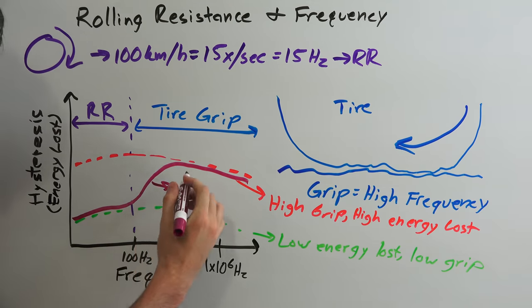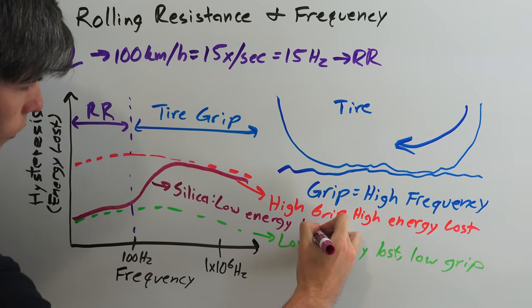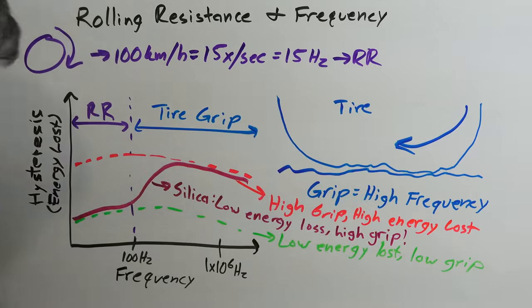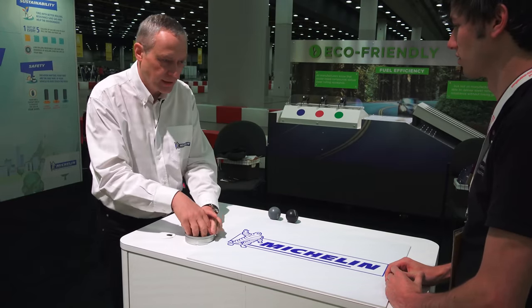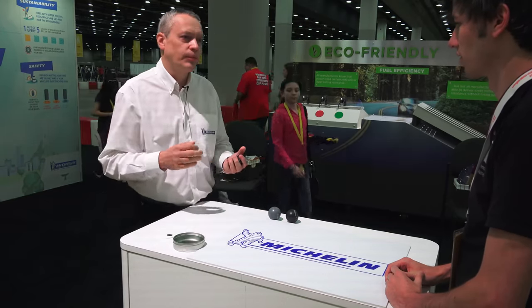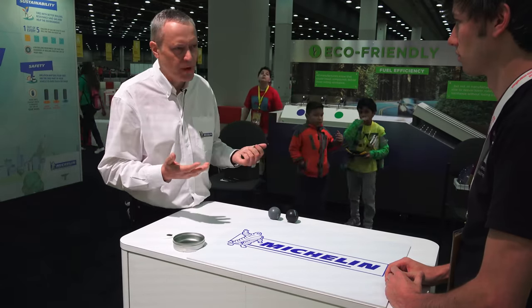This is where silica plays by different rules. Silica compounds have low energy losses in the low frequency range, meaning low rolling resistance, but high energy losses in the high frequency range, meaning they have high grip. Thanks to silica, we are able to separate the behavior of the compound depending on the speed of deformation or frequency.